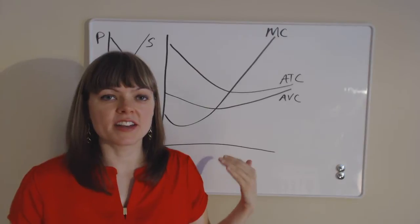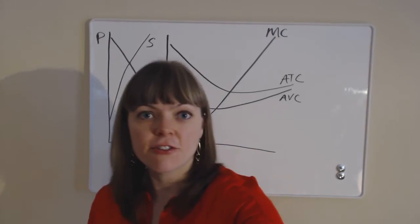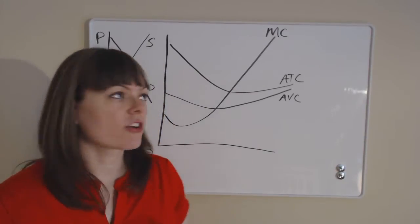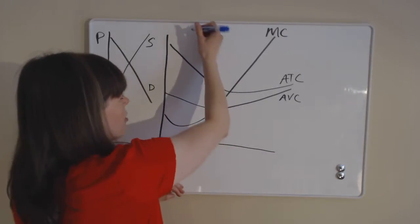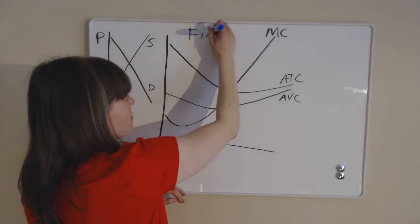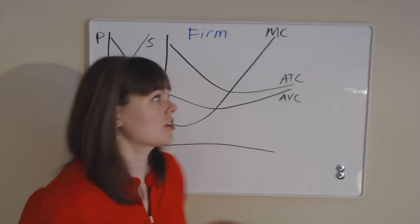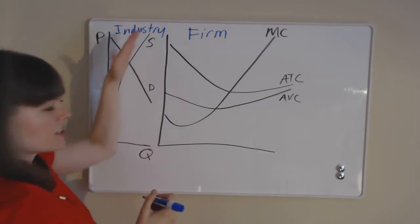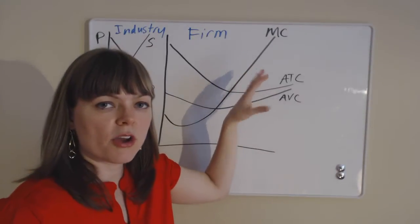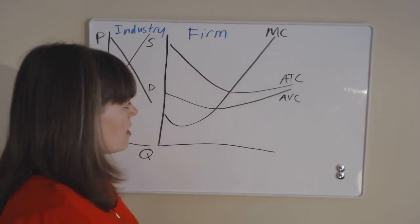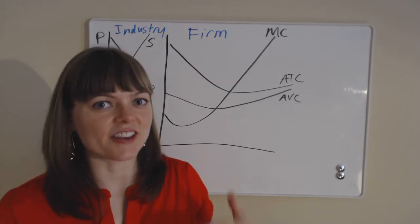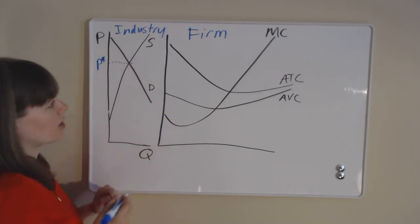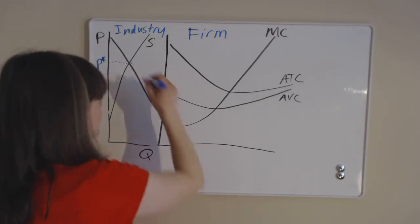We're looking at the case of a perfectly competitive industry and the cost curves for a particular firm in that industry. We're going to find the profit box and think about what happens in the long run. Anytime you have a graph like this with cost curves in a perfectly competitive market, these cost curves represent a representative firm always associated with an industry. The industry has its own supply and demand curves, and we need to determine a market price — that's always just going to be at the equilibrium.